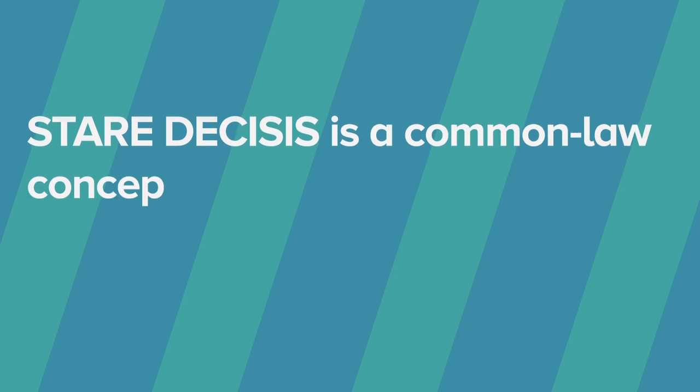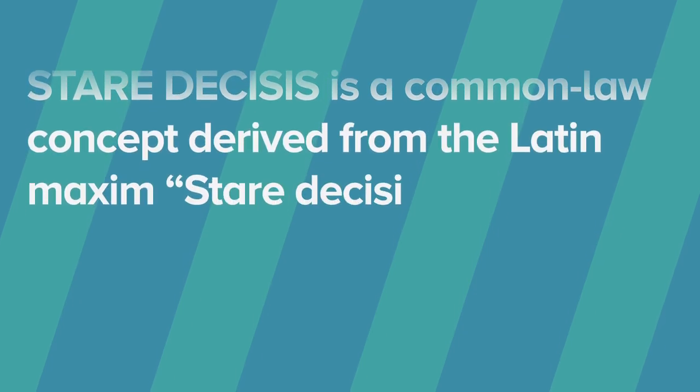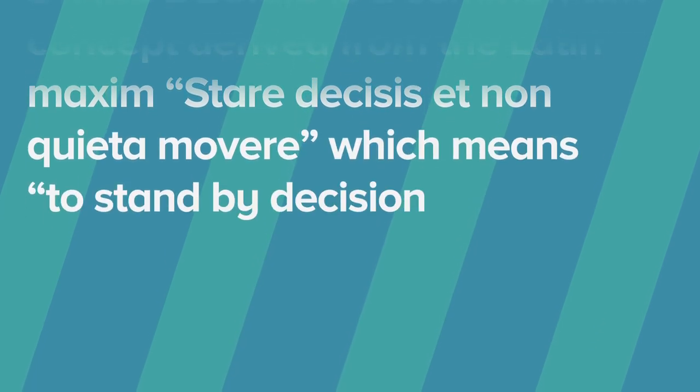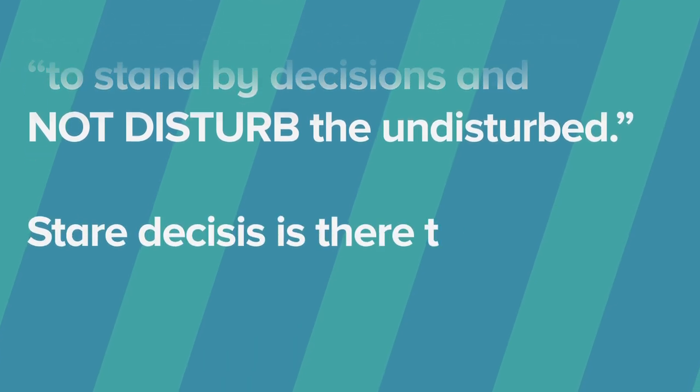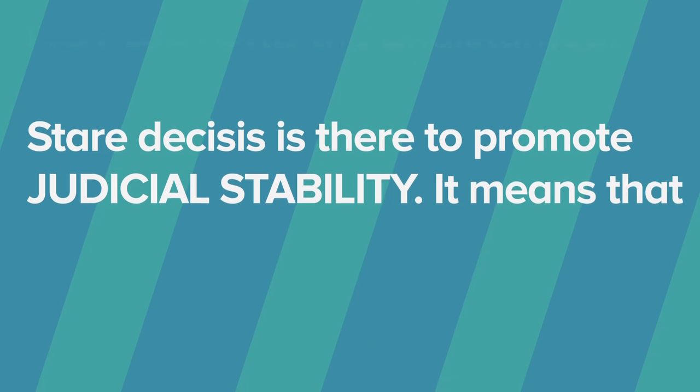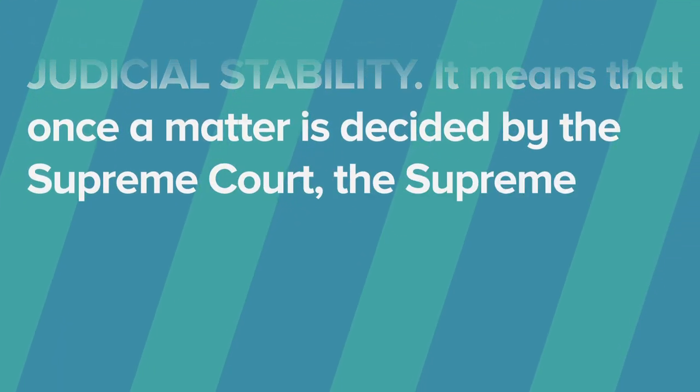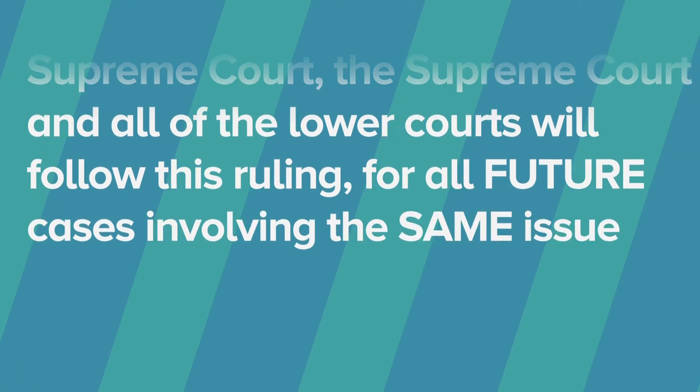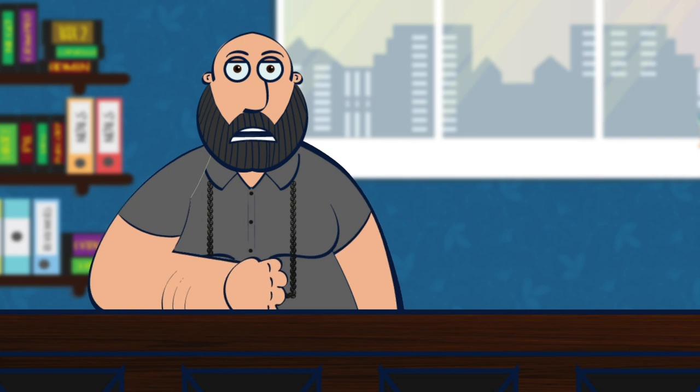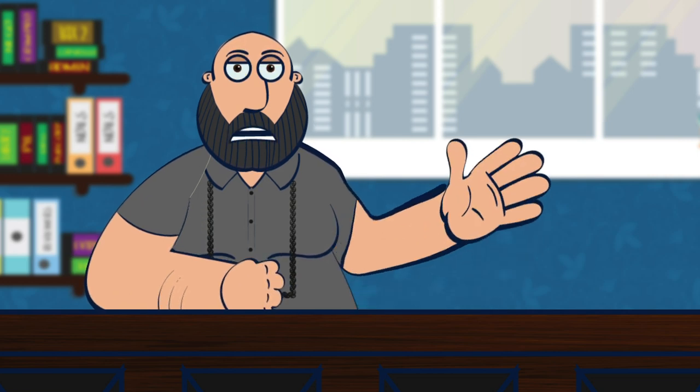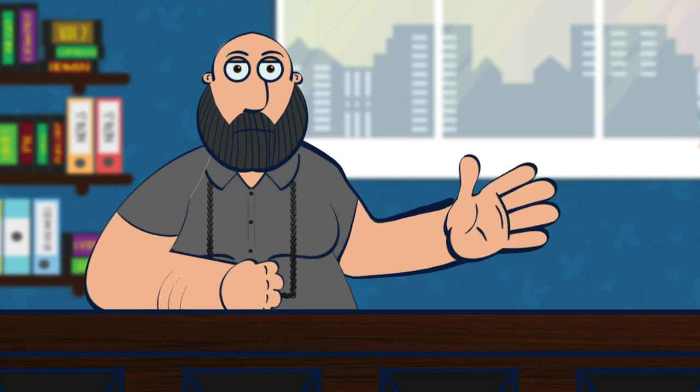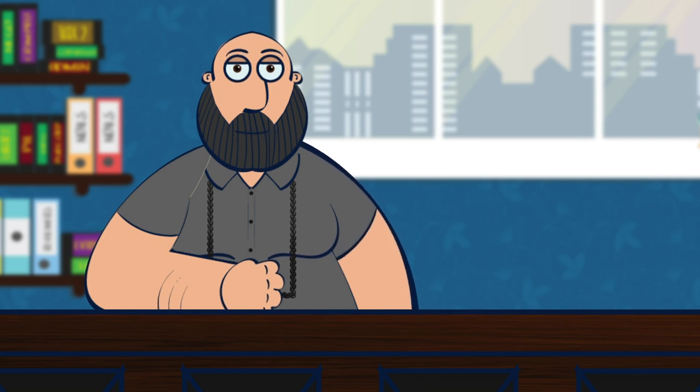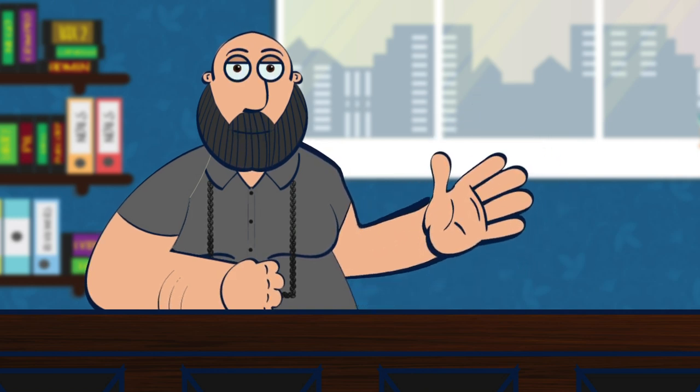Second point I would like to make is the principle of stare decisis. Stare decisis is a common law concept derived from the Latin maxim stare decisis et non queta movere, which means to stand by decisions and not disturb the undisturbed. Stare decisis is there to promote judicial stability. It means that once a matter is decided by the Supreme Court, the Supreme Court and all of the lower courts will follow this ruling for all future cases involving the same issues. However, the rule of stare decisis is not absolute. Just because the Supreme Court has decided does not mean that the ruling cannot be abandoned, modified, or changed. Tinatanggap ni Korte Suprema na nagbabago ang ating mundong ginagalawan na kung ano ang tama at dapat noon ay maaaring hindi na akma sa ating panahon.